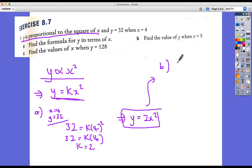And we're going to find the value of Y when X is 5. So Y is 2 times 5 squared. Y is 2 times 25. Y is 50.